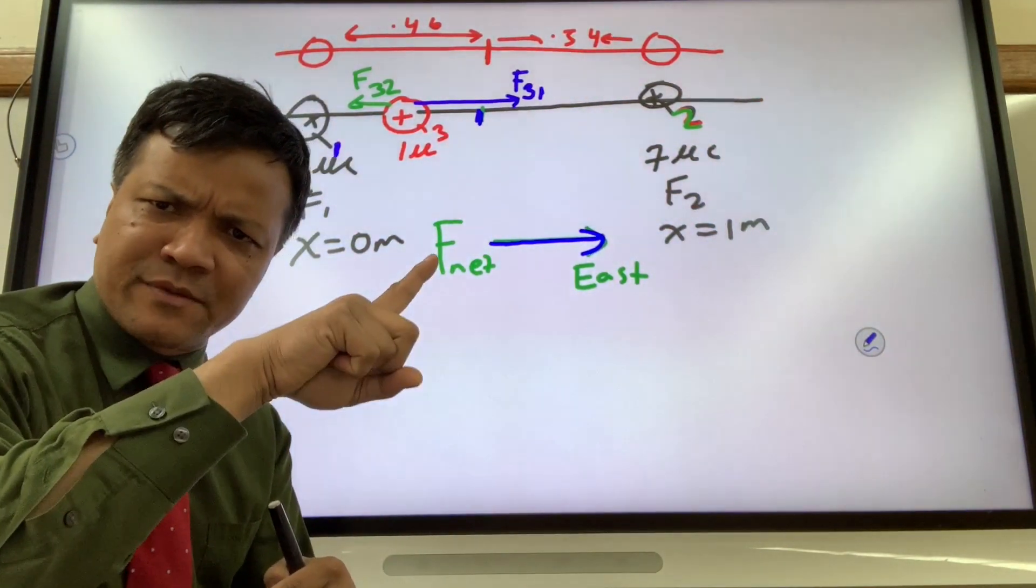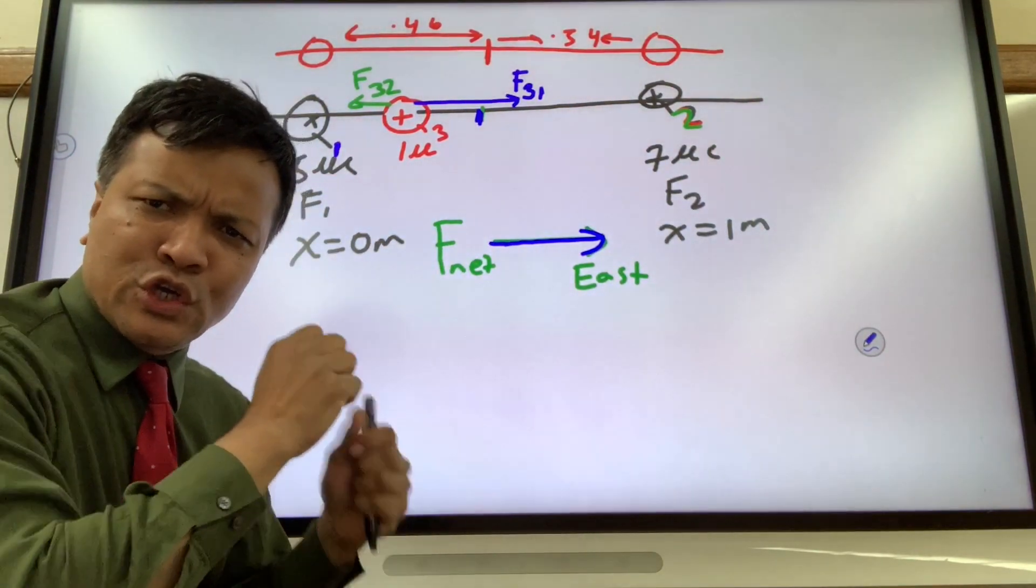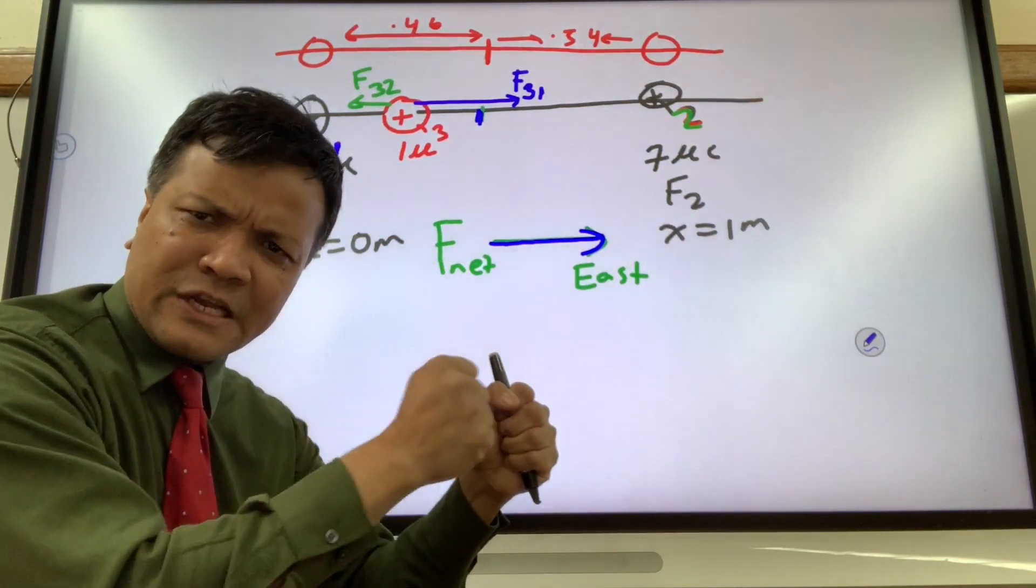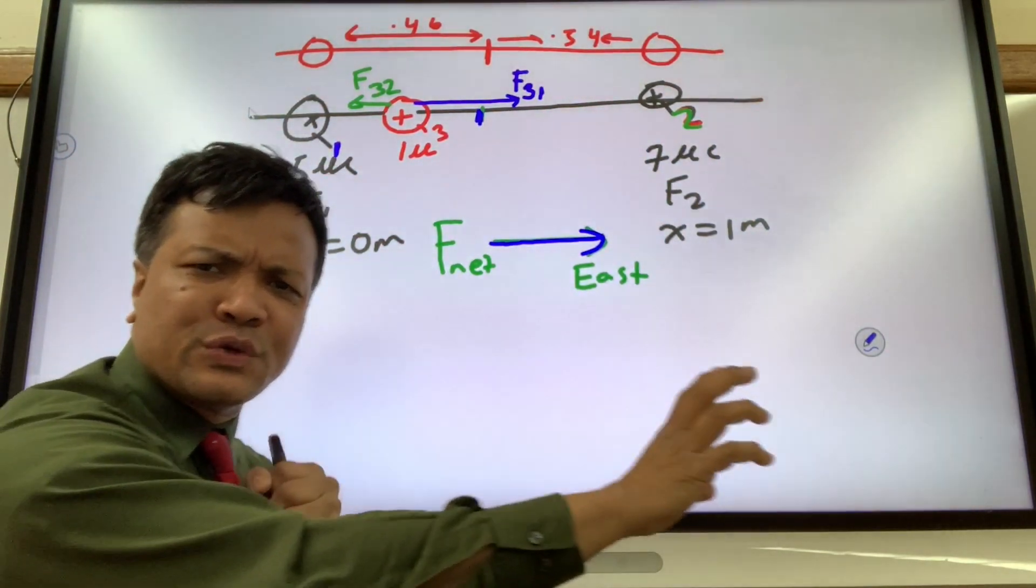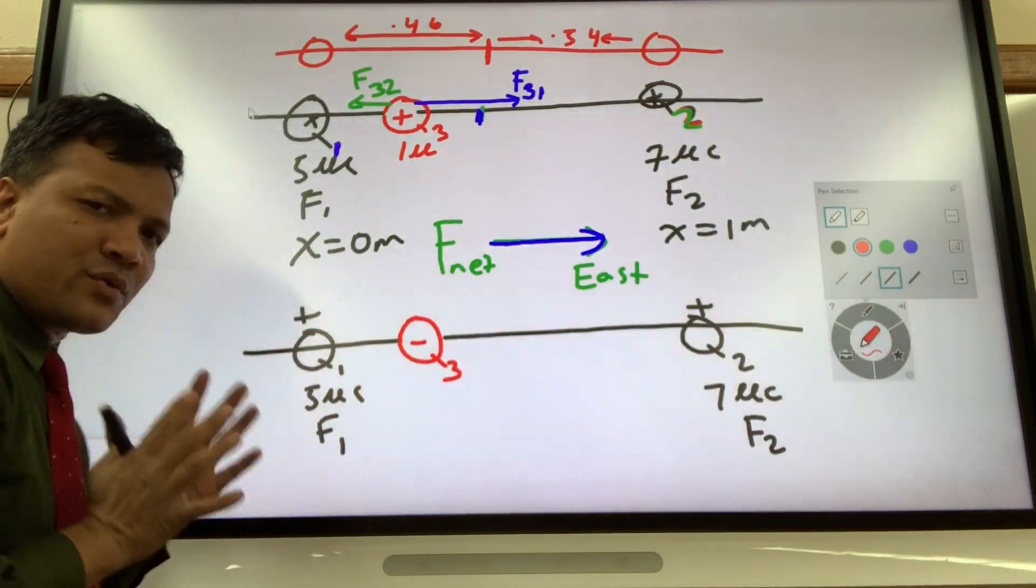Now we're going to see the other side of the coin. This time we're going to make q3 negative to see whether the electrostatic force will push it to the equilibrium. Let's take a look. This is q3 negative.